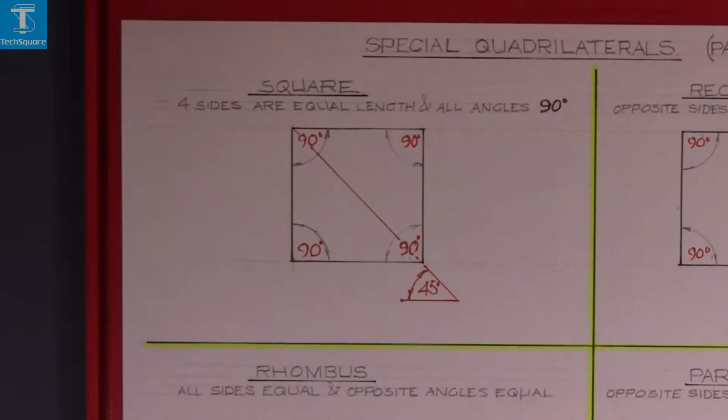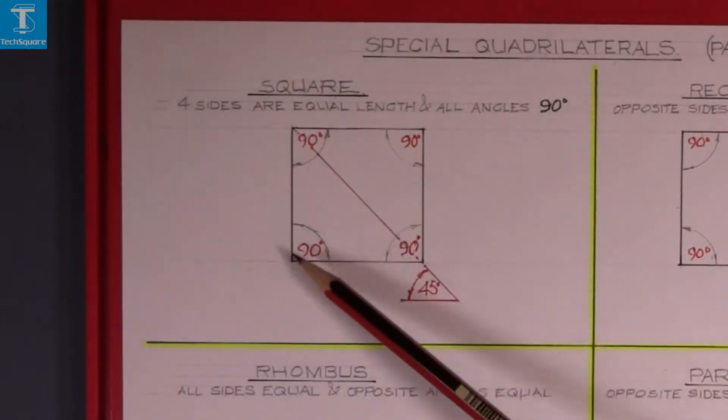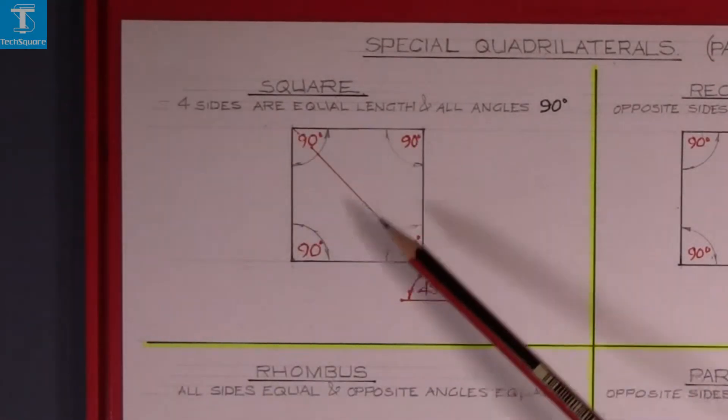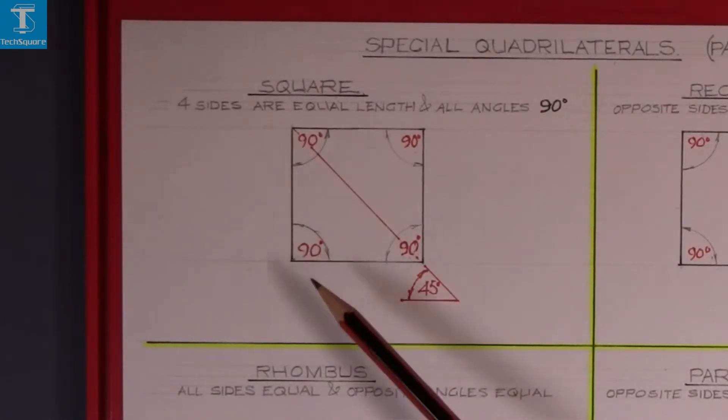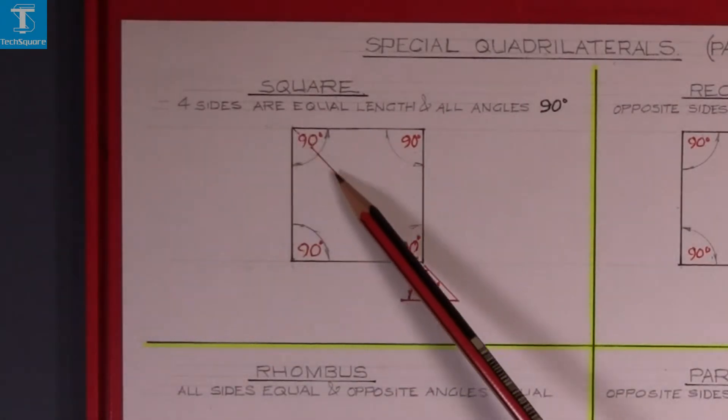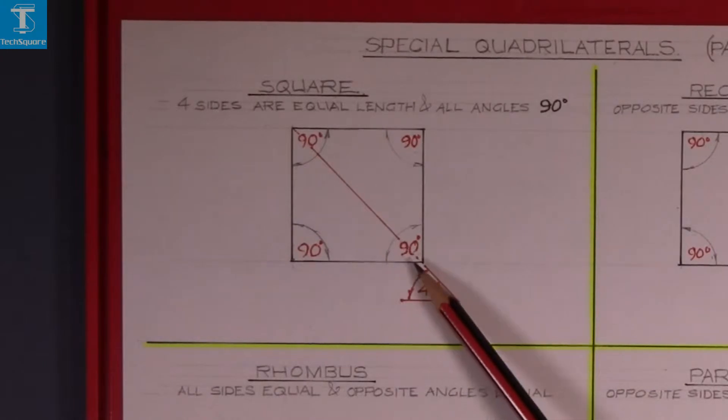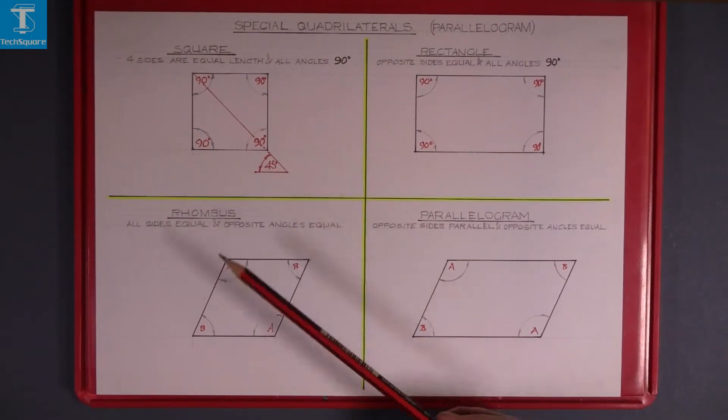So the first one we're dealing with here is a square. A square has four equal sides and four equal angles and the diagonal of a square is a 45 degree angle so that's always 45 degrees. And that's a square.